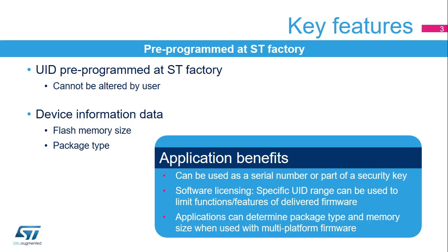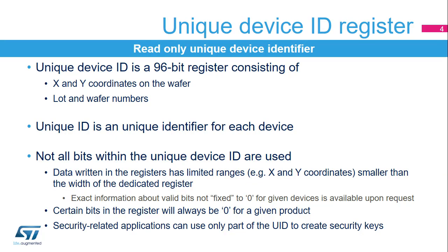Multi-platform firmware can use the UID to determine package type and memory size for managing application functions and features. The unique device identifier is a 96-bit register that contains the coordinates of the die on the wafer, lot number, and wafer number.